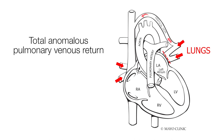So they go up the vertical vein and around to join the blue blood on the right side of the heart. The highlighted yellow shows the hole in the atrium that allows blood into the left atrium so that the left heart has some blood to pump to the body.